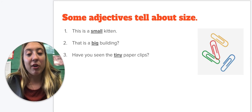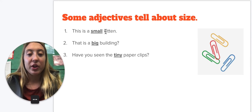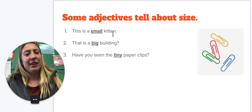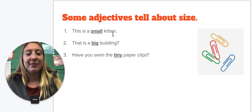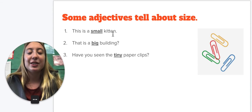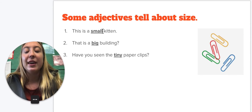So this is a small kitten is number one. So I know that our noun is kitten, but what kind of kitten? Now, what word is describing kitten? Small. It is a small kitten. So small is my adjective.